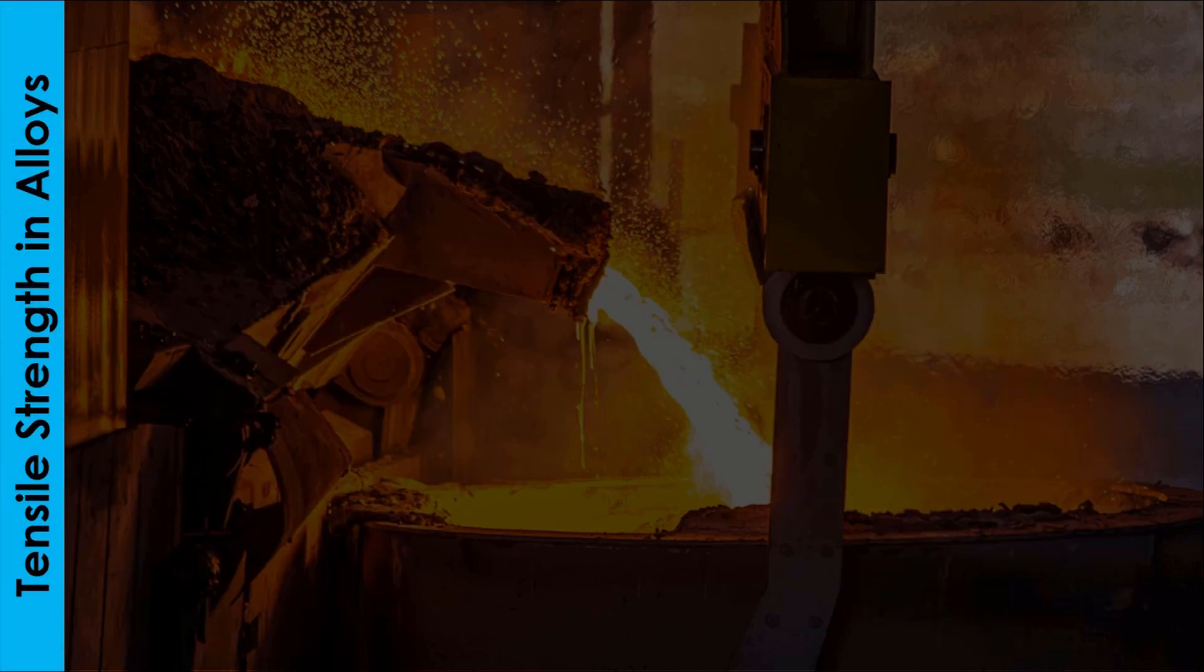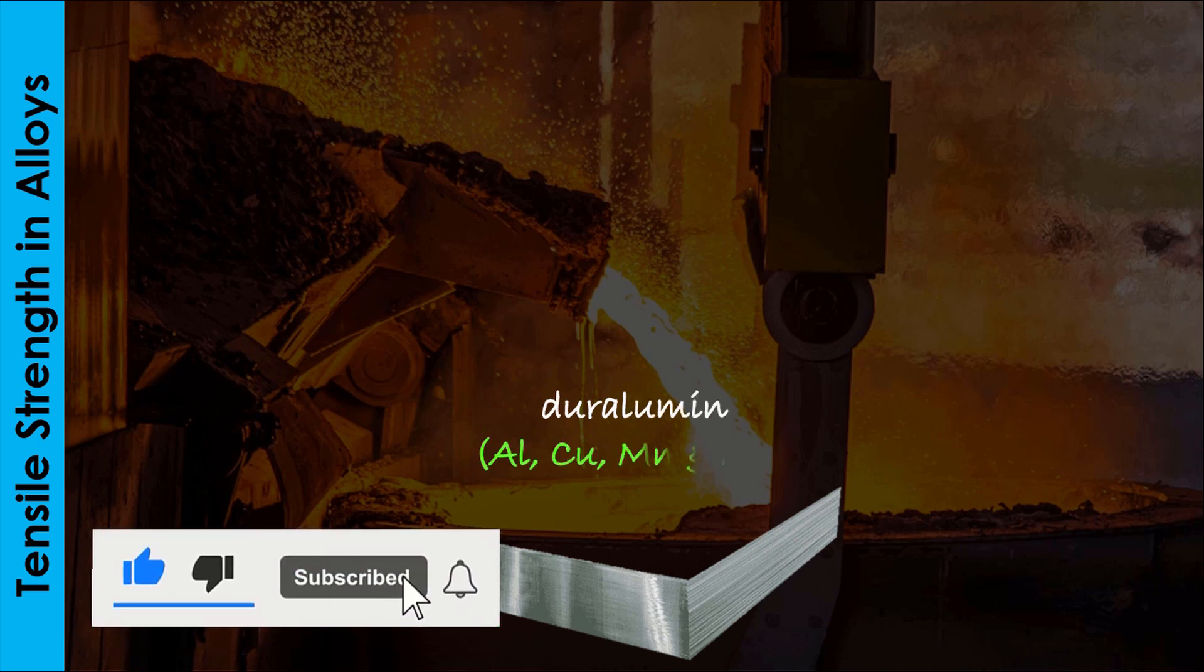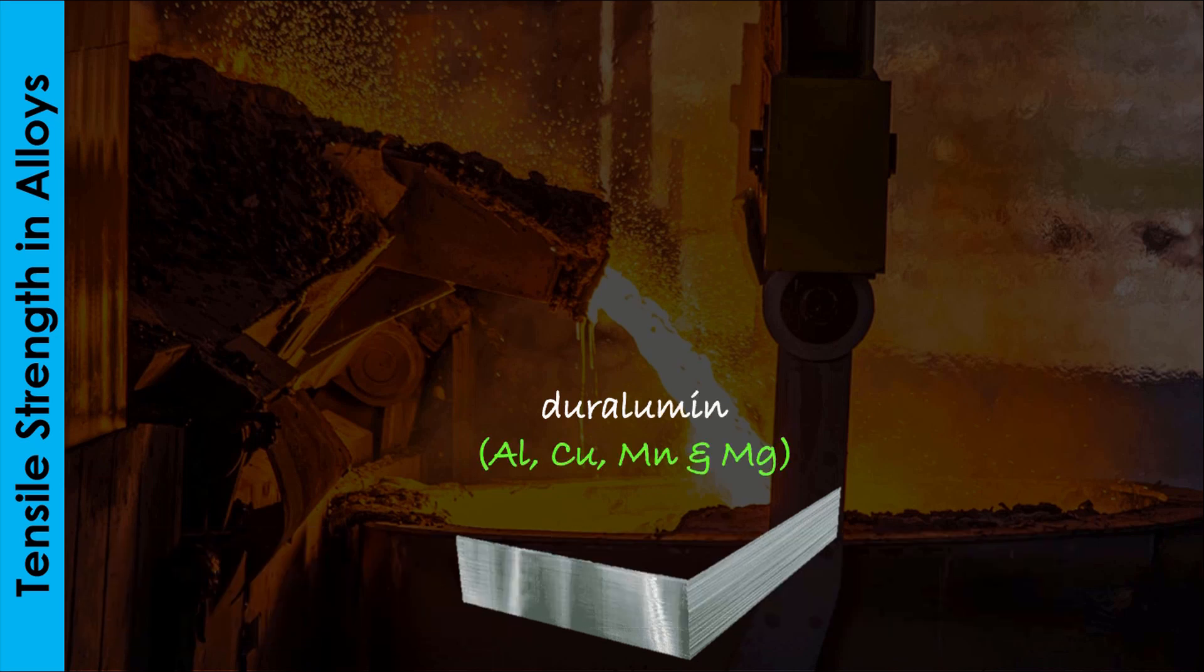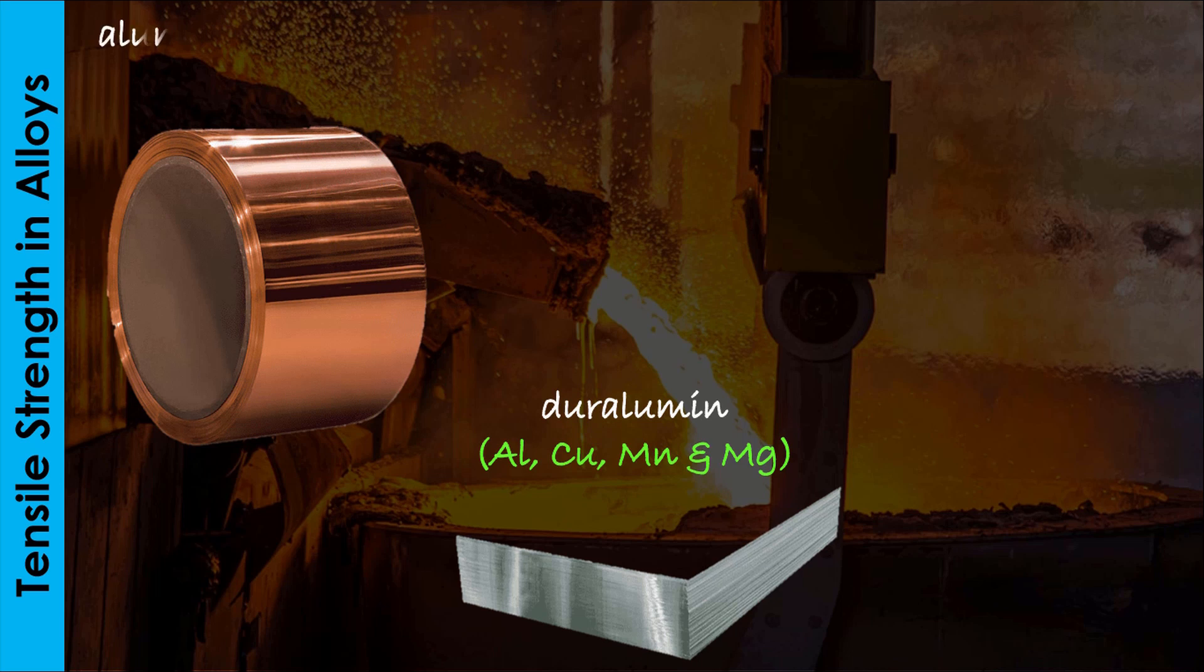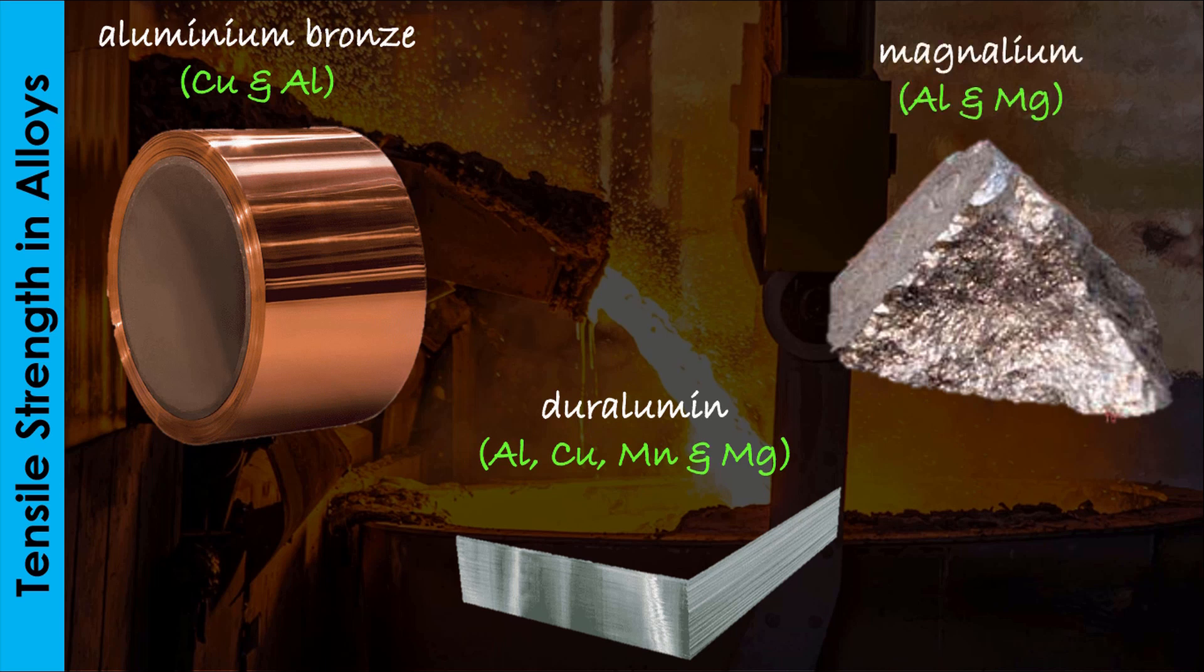Alone, aluminum metal is not very strong, but when mixed with other metals like copper, manganese, and magnesium, it forms strong alloys. Examples include duralumin made up of aluminum, copper, manganese, and magnesium; aluminum bronze made up of aluminum and copper; and magnalium made up of aluminum and magnesium. These alloys are employed in the aircraft, car, and shipmaking industries.